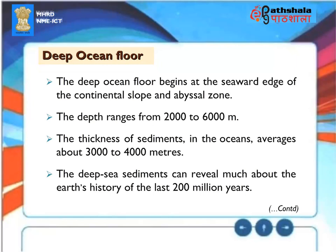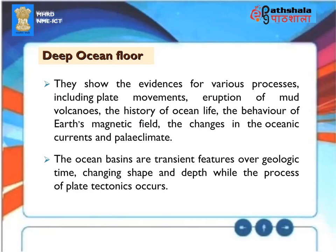Deep Ocean Floor. The deep ocean floor begins at the seaward edge of the continental slope and abyssal zone. The depth ranges from 2,000 to 6,000 meters. The thickness of sediments in the oceans averages about 3,000 to 4,000 meters. The deep sea sediments can reveal much about the Earth's history of the last 200 million years. They show the evidences for various processes, including plate movements, eruption of mud volcanoes, the history of ocean life, the behavior of Earth's magnetic field, the changes in the oceanic currents and paleoclimate. The ocean basins are transient features over geologic time, changing shape and depth while the process of plate tectonics occurs.